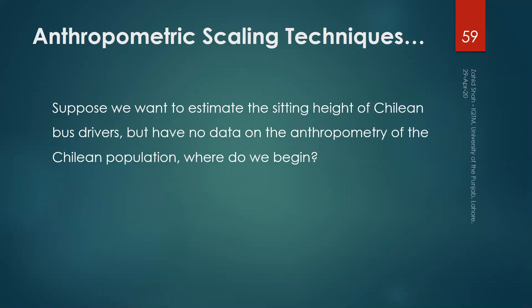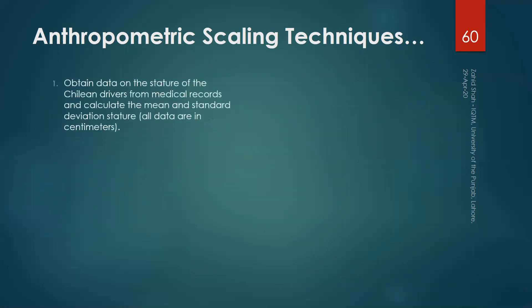Let's solve a simple example. Suppose you want to estimate the sitting height of Chilean bus drivers — that is the target population — but you have no data on the anthropometry of the Chilean population. First, we need data on the stature of the Chilean drivers from medical records to calculate the mean and standard deviation of stature. Suppose we found the mean stature to be 166 cm and standard deviation of stature to be 5.5 cm.